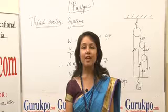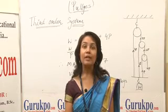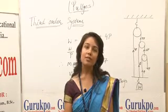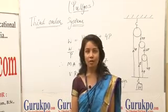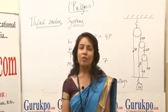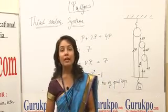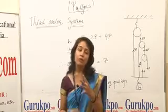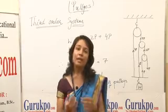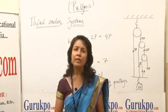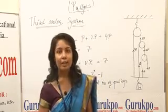From my previous lectures, I have delivered lectures on lifting machines, pulley introduction, the first order system, and the second order system. Now it is time to look at the third order system. In the first and second order systems, we saw a fixed rigid ceiling with fixed pulleys attached to the ceiling and some movable pulleys, with a weight connected to one of the moving pulleys, and the velocity ratio and mechanical advantage were calculated.